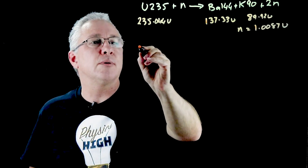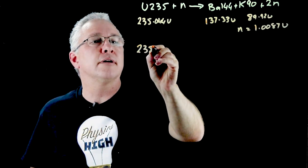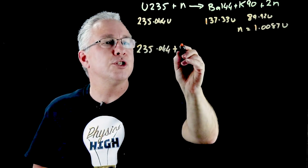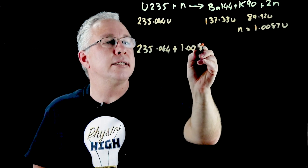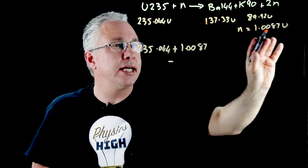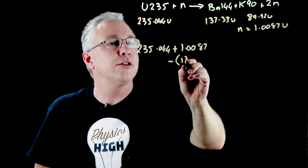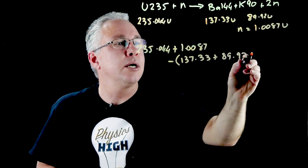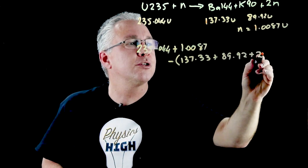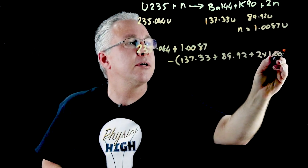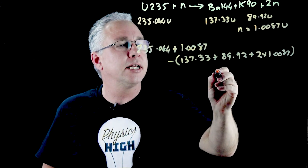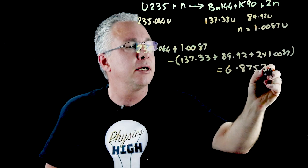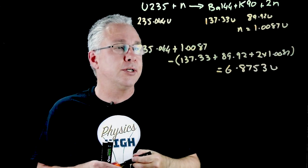All we need to do is say, well, we've got 235.044 plus my neutron which is 1.0087, subtract everything afterwards, which is 137.33 plus 89.92 plus two neutrons, so two times 1.0087. When you calculate that out, you're going to get an answer of 6.8753u or atomic mass units.